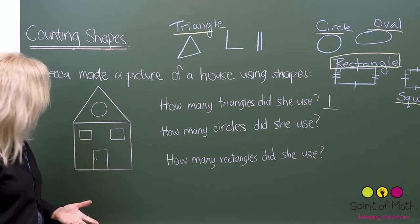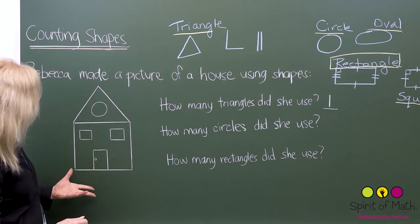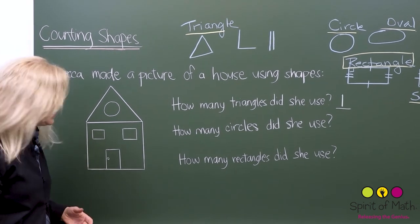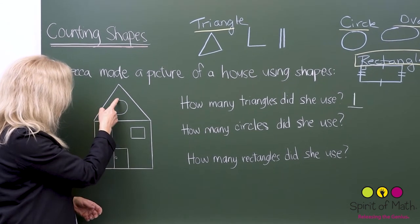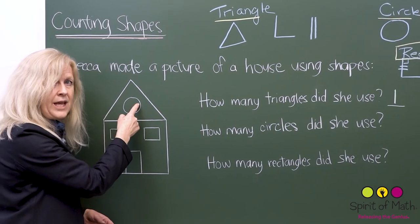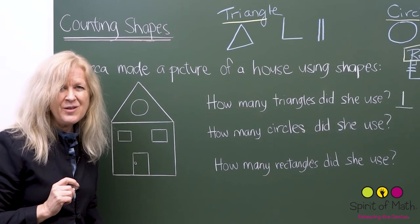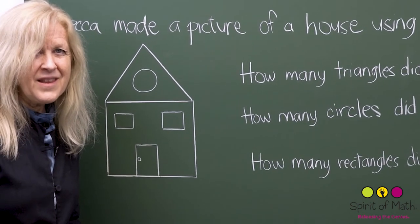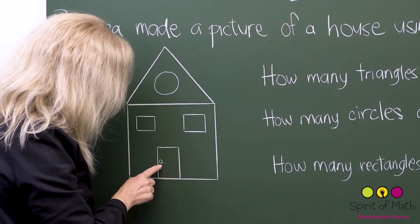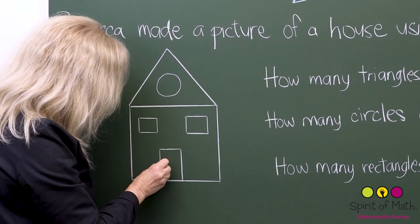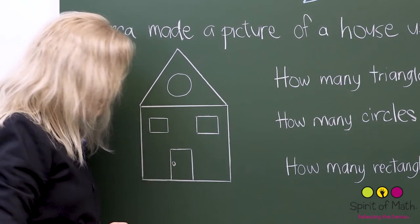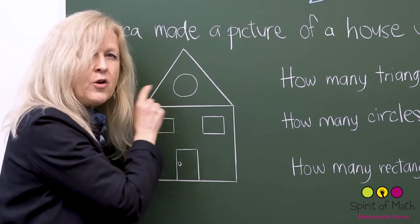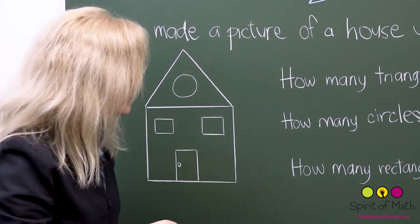Now, how many circles did she use? You can see that fairly quickly. There's one big circle right there, and there is another circle — do you see it? Right here. You've got a circle on the doorknob, and you've got a big circle up here for a window. So there are two circles.